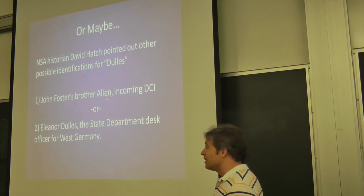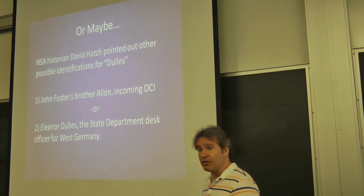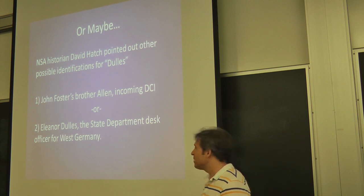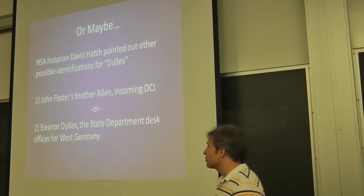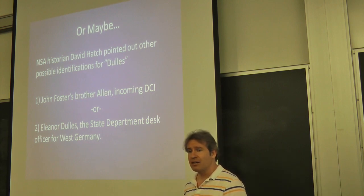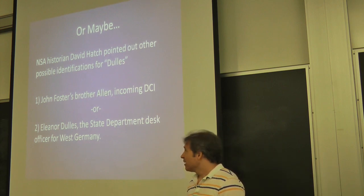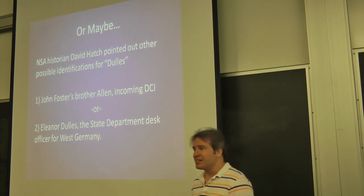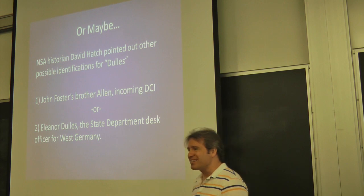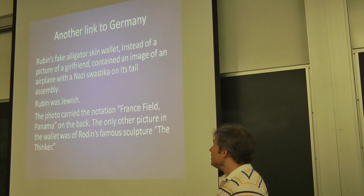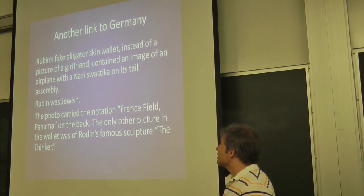Anyway, David Hatch suggested some other possibilities for Dulles. John Foster's brother, Alan, incoming director of central intelligence. Is this 18-year-old talking about him in this encrypted message? Or Eleanor Dulles, a State Department desk officer for West Germany. Again, a German connection. So this is what I love about the NSA historians. I think I know who Dulles is. And then he comes up with more interpretations, right? Much deeper knowledge base.